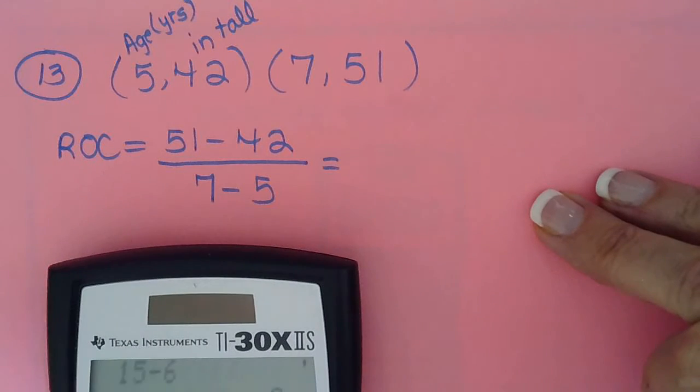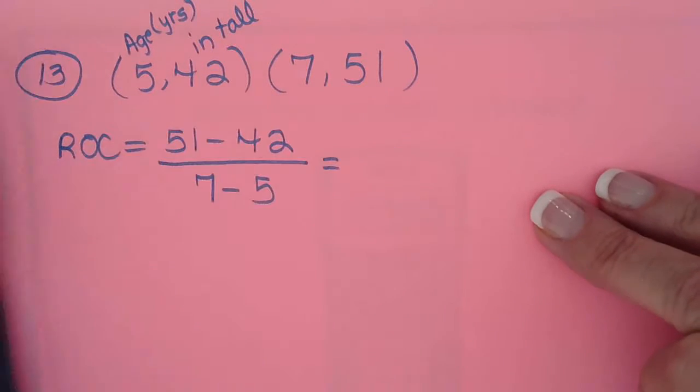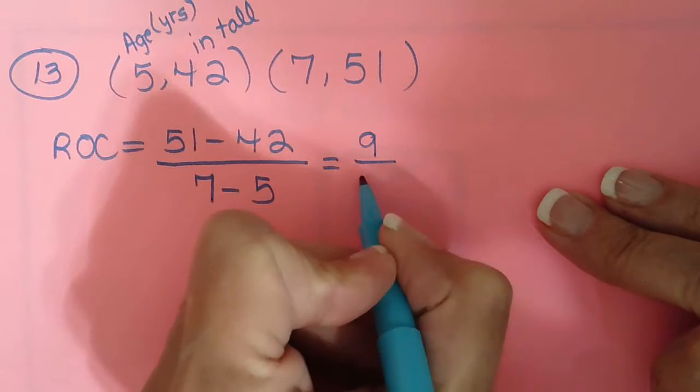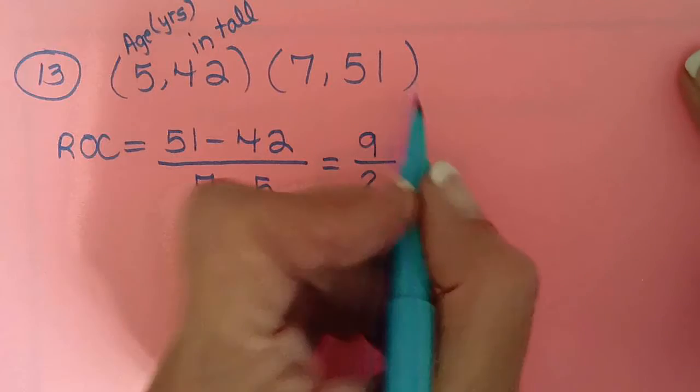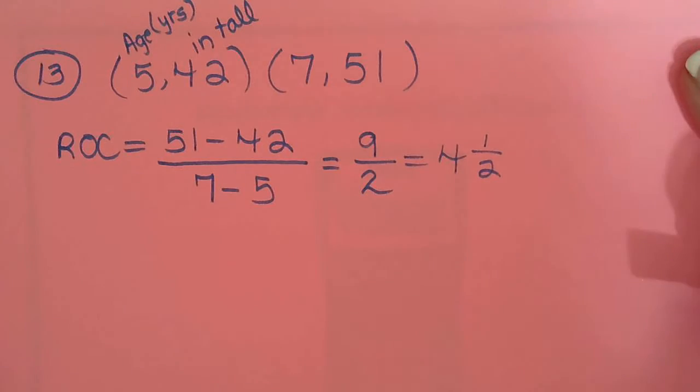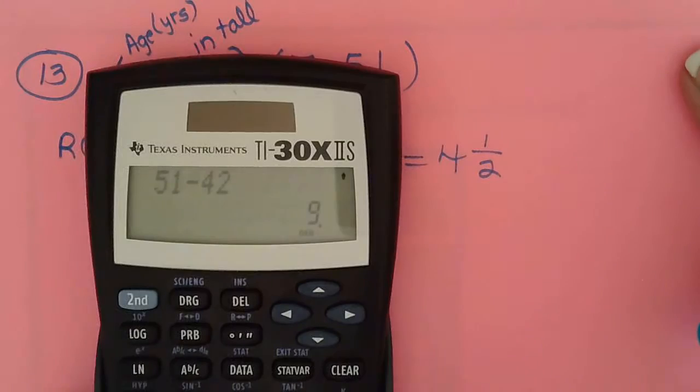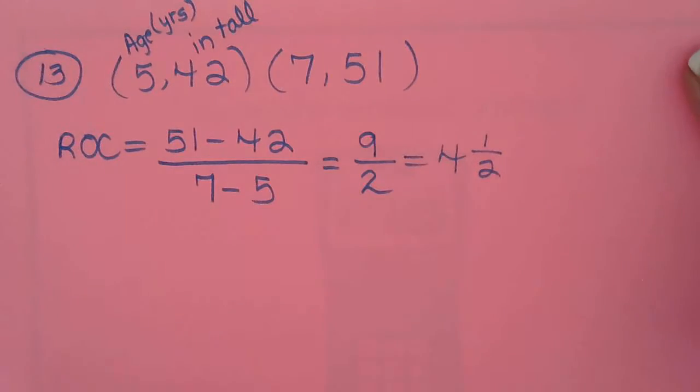So what is that? Is that 9? I believe 51 minus 42 is 9. Yes, it is. So 9 over 2. And we're talking about how much he's growing per year. So saying he grew 9 over 2 inch per year is not a good way to say it. So you should either use a mixed number or a decimal. Take your pick. I'm going to use, because we don't usually say, oh, I grew 4.5 inches. We say, I grew 4 1/2 inches. And to do that again, you just do 9 fraction bar 2. That changes it to 4 1/2.